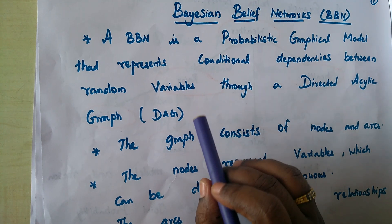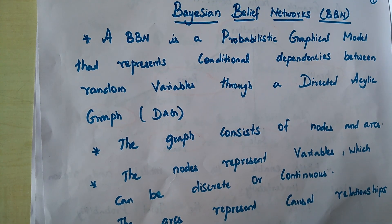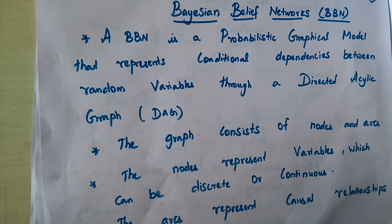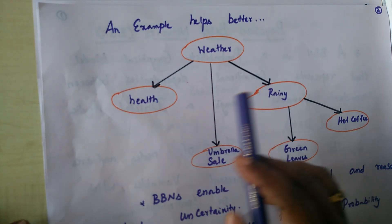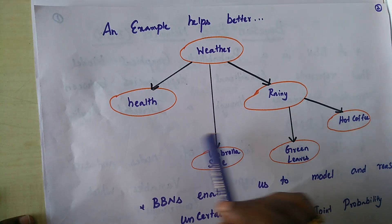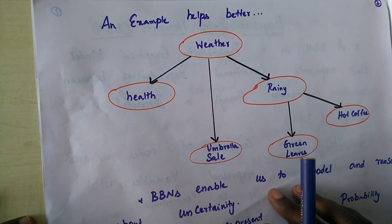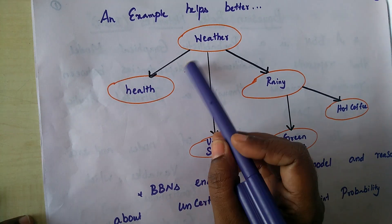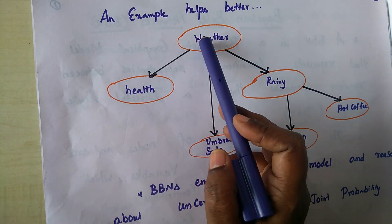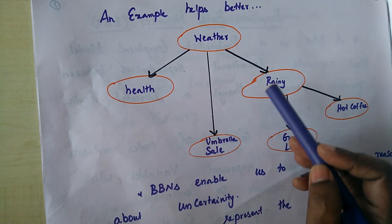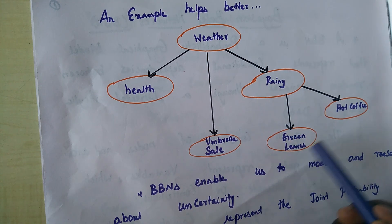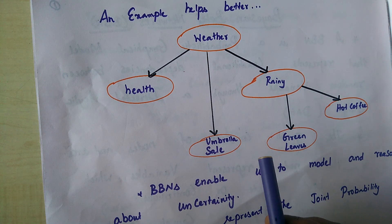Let us look at an example which will make things better. This is an example of a directed acyclic graph. We have random variables: weather, health, umbrella sale, rainy, green leaves, and hot coffee.